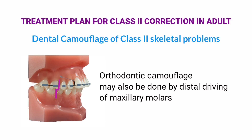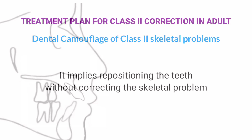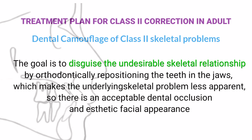Orthodontic camouflage may also be done by distal drifting of maxillary molars. It implies repositioning the teeth without correcting the skeletal problem. The goal is to disguise the undesirable skeletal relationship by orthodontically repositioning the teeth in the jaws, which makes the underlying skeletal problem less apparent, resulting in an acceptable dental occlusion and aesthetic facial appearance.